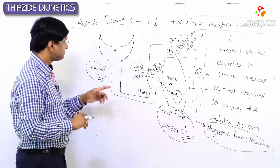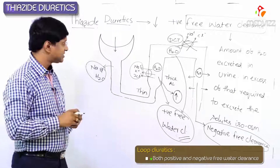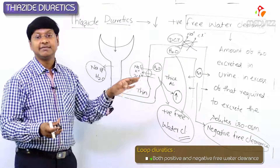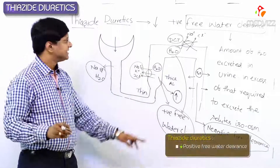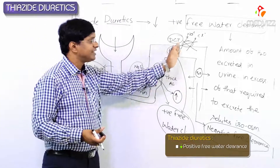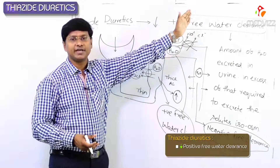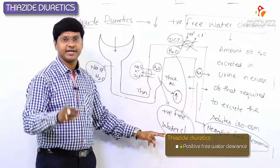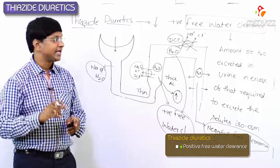Loop diuretics decrease both the positive free water clearance and the negative free water clearance, whereas thiazide diuretics decrease only the positive free water clearance. This is because thiazides inhibit sodium chloride reabsorption at the DCT, so solutes are not reabsorbed and mix with water, reducing positive free water clearance.